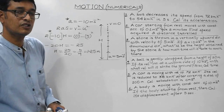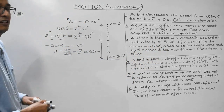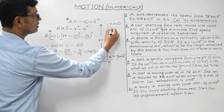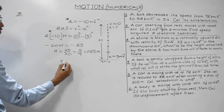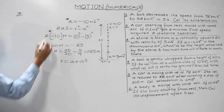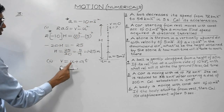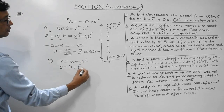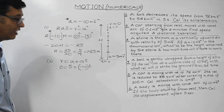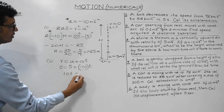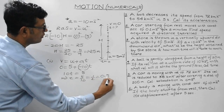For the second part — how much time the stone takes to reach the highest point — we use the first equation v = u + at: 0 = 5 + (-10)t → 10t = 5 → t = 0.5 seconds. So the height attained is 1.25 meters and the time taken to reach the highest point is 0.5 seconds.